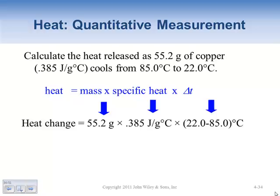Heat change equals mass times specific heat times change in temperature. We have our known mass, our known specific heat of 0.385 J/g°C, and then the temperature change - which is final temperature minus initial temperature. Since the copper is cooling down, we have 22 minus 85. Don't switch them - it started hotter and got colder. Final temperature is always first, initial temperature is always second.